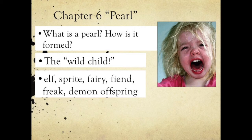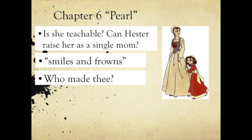Hester is trying to raise Pearl in a Christian, Puritan household and tries to teach her religious lessons. She asks Pearl, 'Who made thee?' and 'Can you tell me who your heavenly father is?' And Pearl says, 'I have no heavenly father.' This is very upsetting to Hester, who is trying to raise Pearl as a single mom and teach her religious lessons, but Pearl just will not have any of it.